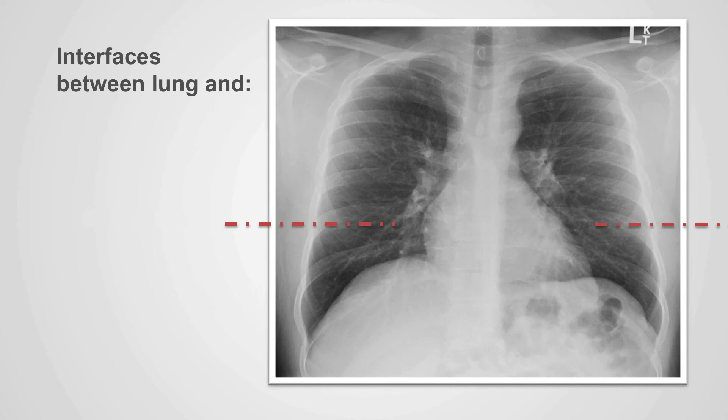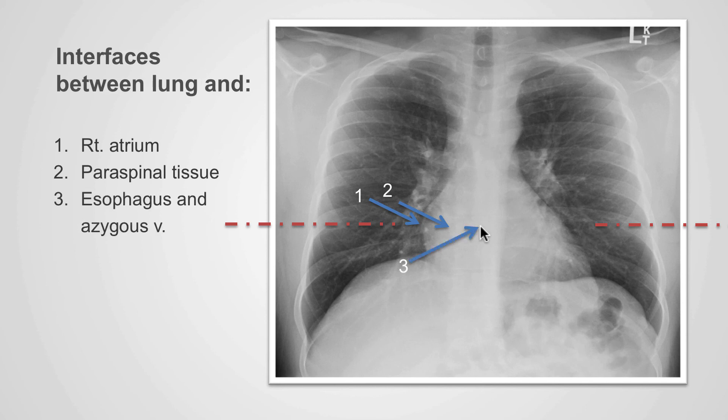Can you identify what would cause the interface between the lung and here? That is the right atrium. We can see another interface in this region and that is caused by the paraspinal tissues. There is another interface at this level. Do you know what that is caused by? That is caused by the interface between the lung and the esophagus and the azygos vein.